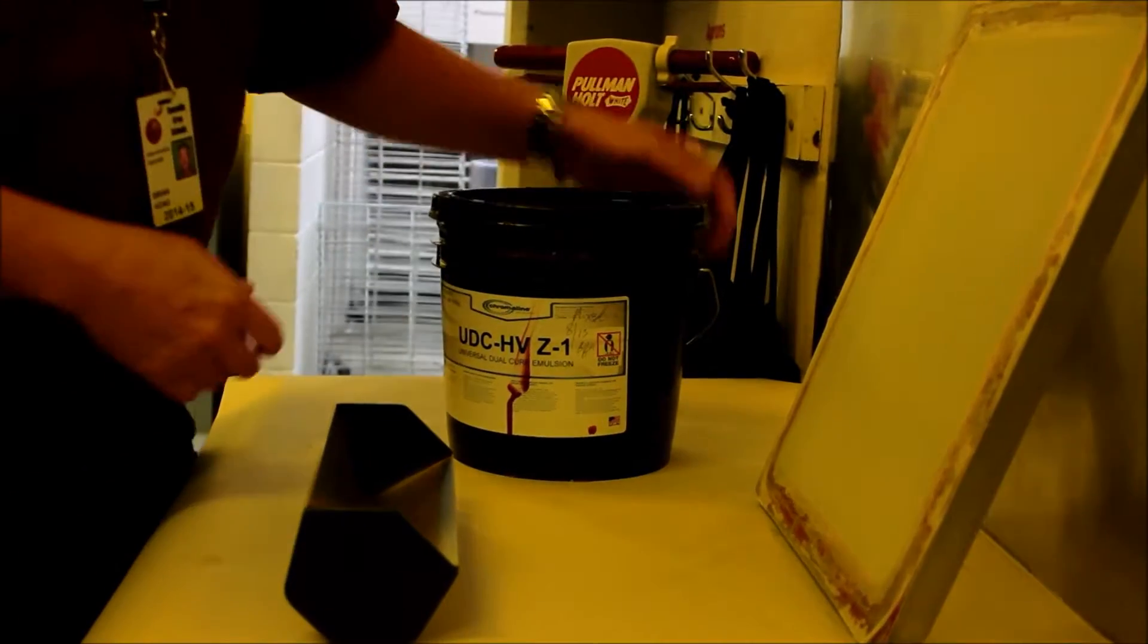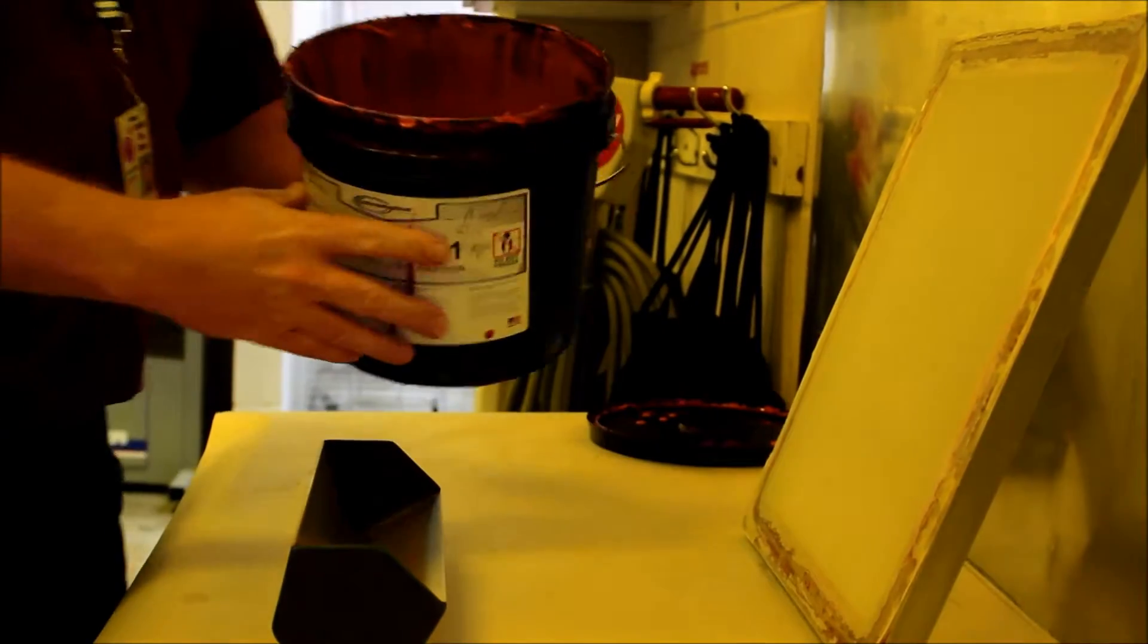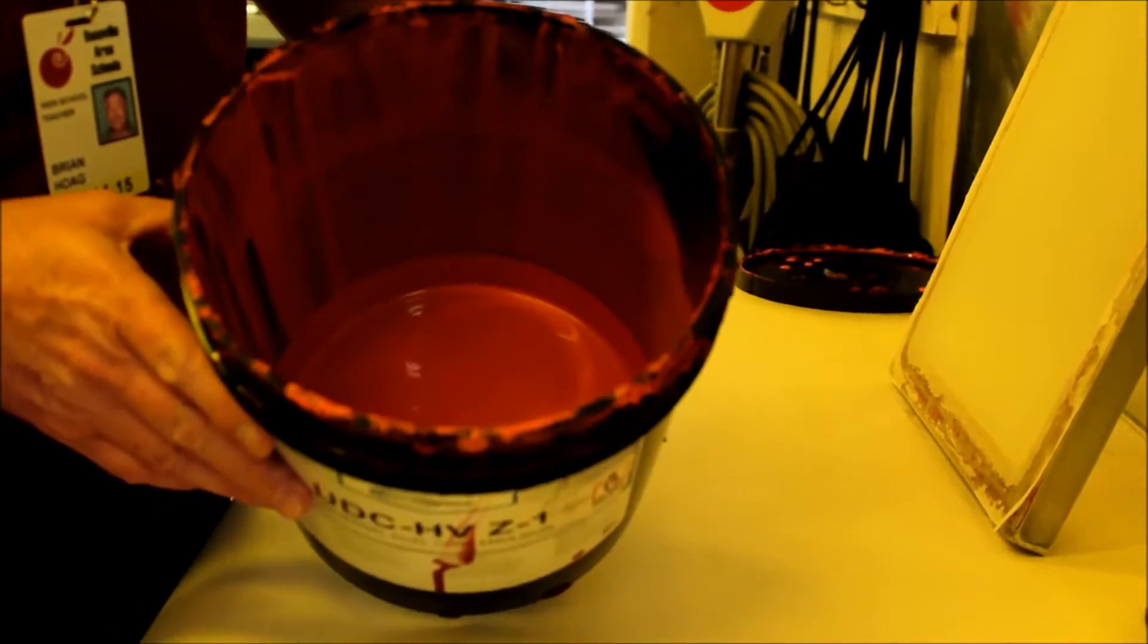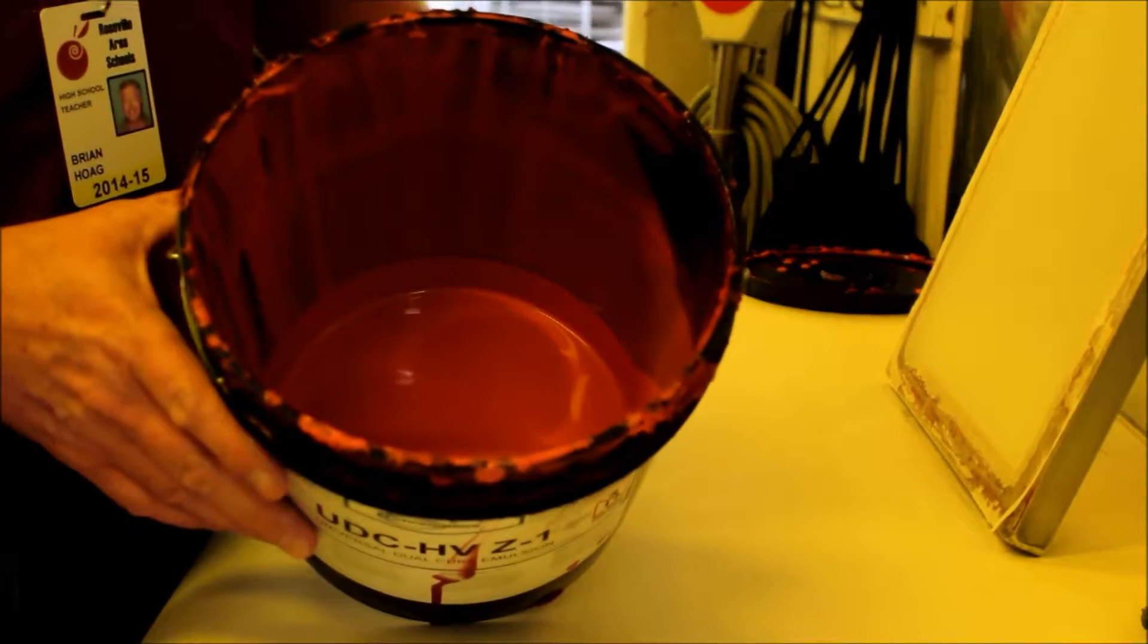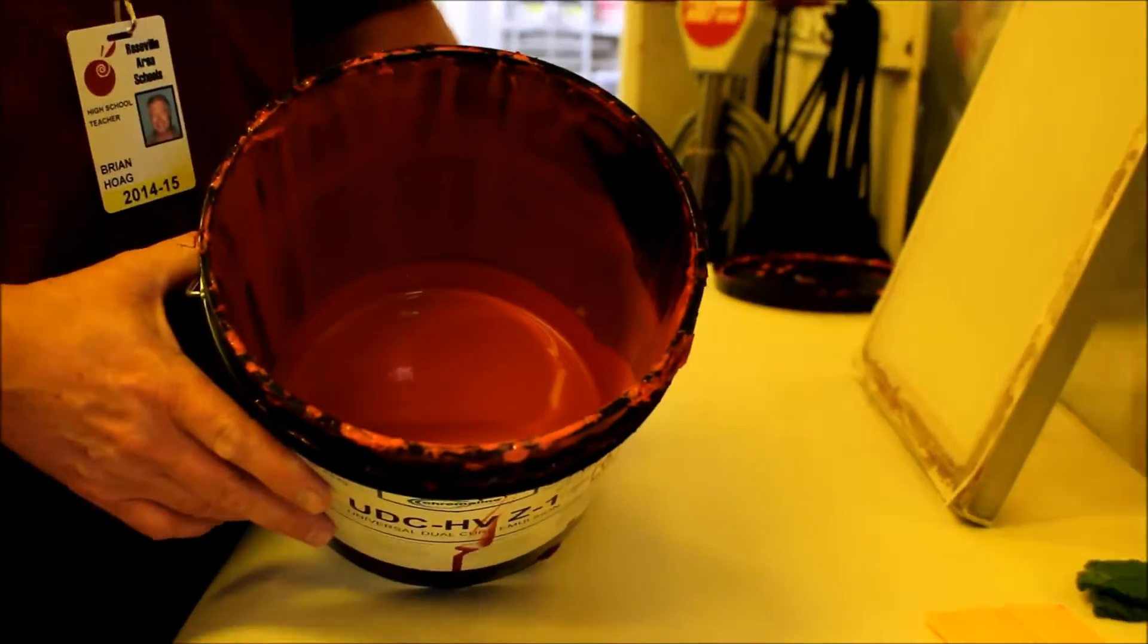So what we're going to do is take our emulsion and open the top up. The emulsion has kind of the look and consistency and somewhat the smell of Elmer's glue, although it's not. It's actually a series of photopolymers that we're applying.